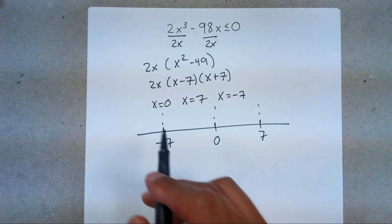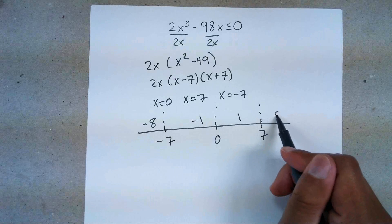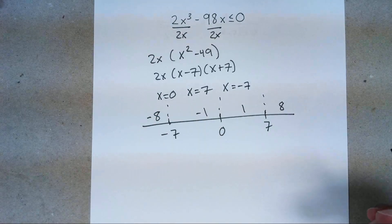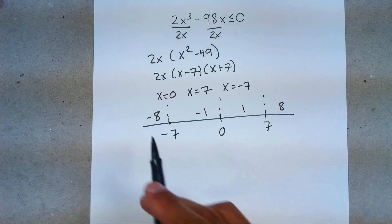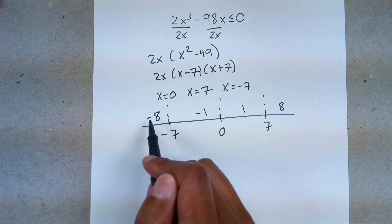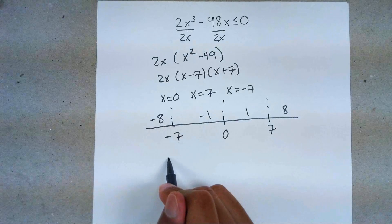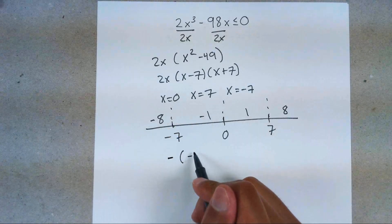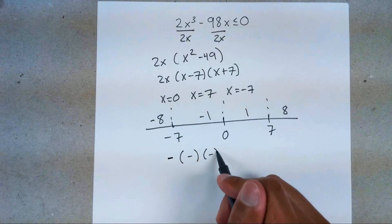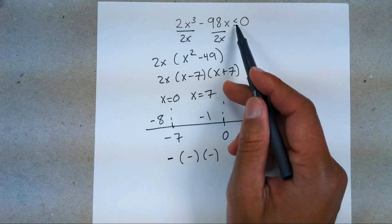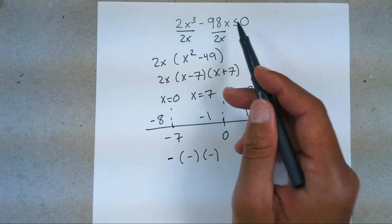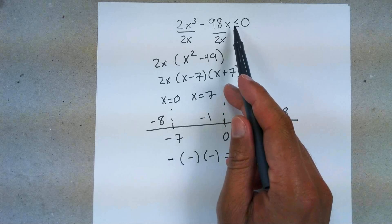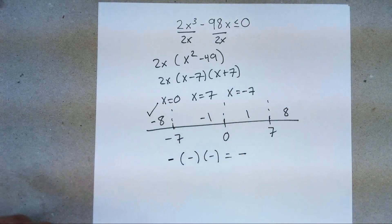Now it doesn't matter the points you pick — I'll pick −8, −1, 1, 8. A shortcut: rather than computing exact values, just track the sign of each factor. We only care if it's going to be less than zero or greater than zero. Plugging in −8: 2(−8) is negative; (−8 − 7) is negative; (−8 + 7) is negative. A negative times a negative times a negative gives you a negative. Is that what we're looking for? We want less than zero, which is negative — yes. So −8 and any number left of it gets a check mark.